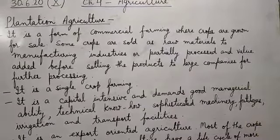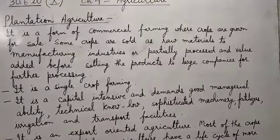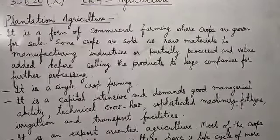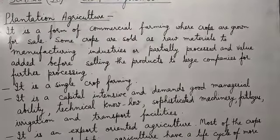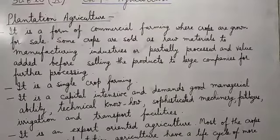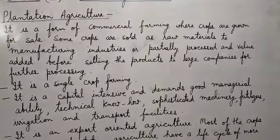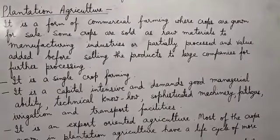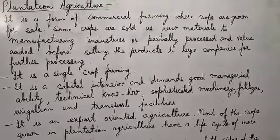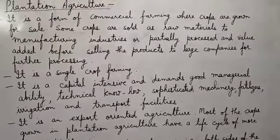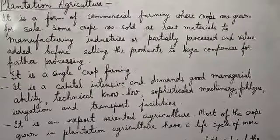The next feature is that it is single crop farming, meaning in these large fields only one crop is grown. This is called single cropping or mono cropping, and that is the speciality of this type of agriculture. Crops like rubber, tea, coffee, cocoa, spices, coconut, and fruit crops like apples, grapes, and oranges are grown over a large area.